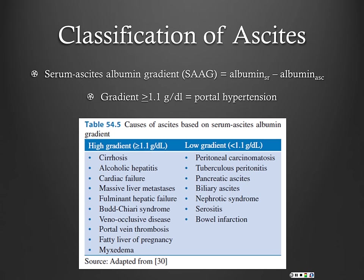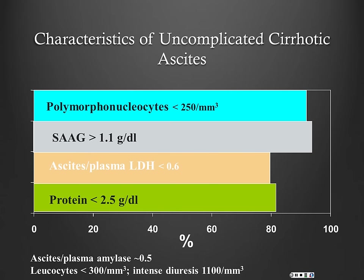Within portal hypertension, the causes are usually either cirrhosis or cardiac failure, and we can use our total protein to differentiate between those two. High SAAG is associated with cirrhosis and heart failure; low SAAG with peritoneal carcinomatosis and TB — the ones you really don't want to miss. Also think about Budd-Chiari and portal vein thrombosis with acute onset ascites.